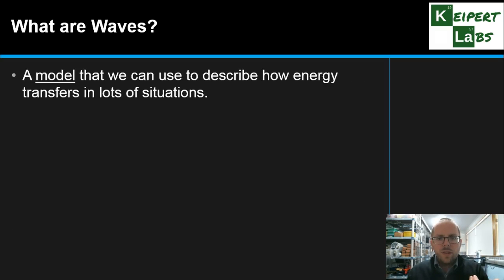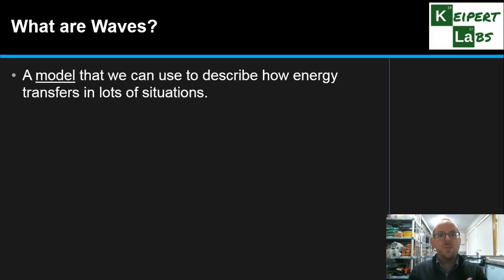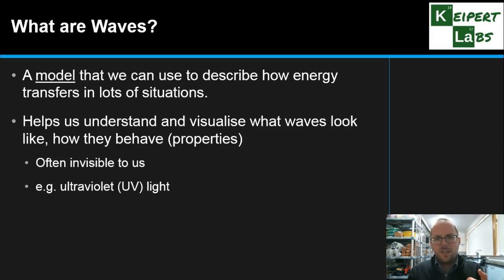In each of these situations, energy is moving from point A to point B, and the mechanism — the 'how' — is this concept of a wave. From a scientific point of view, a wave is a model: a way of describing and better understanding how energy can move in lots of different situations. It has features that are useful for describing the transfer of energy, and it also helps us understand how waves might look and behave — their properties. Many waves we consider are invisible to us, for example ultraviolet or UV light.